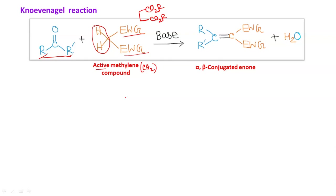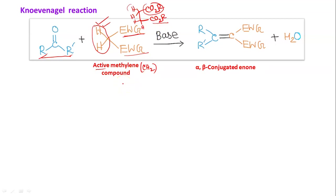The base used here is not a very strong base, because these two hydrogens are already very active. Comparing with the CH₂ hydrogens in Stobbe reaction — there obviously the acidity is more because two electron-withdrawing groups are directly adjacent — but here one CO₂R group is adjacent and another group is not directly attached. So the carbanion generated here is more stable, which is why a mild base is sufficient and the product is an α,β-conjugated enone.